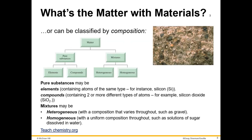When we talk about matter, we talk about it as being a pure substance or a mixture. Within pure substances, we have elements and compounds. Elements contain all the same type of atom, and compounds contain two or more types of atoms. Within mixtures, we have things that are physically combined — either a heterogeneous mixture, hetero meaning different, which has uneven composition, or a homogeneous mixture, homo meaning same, which has a uniform composition.